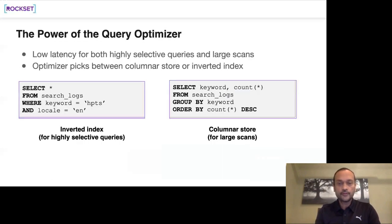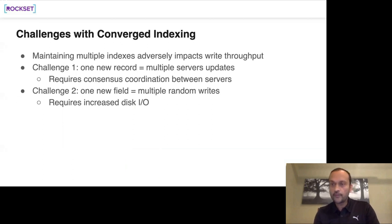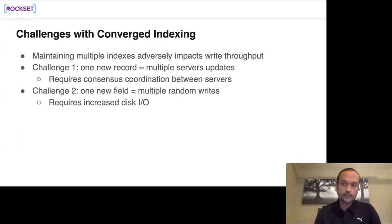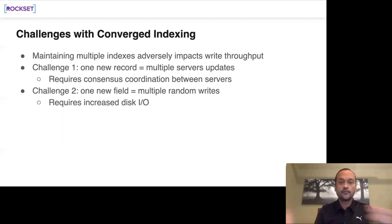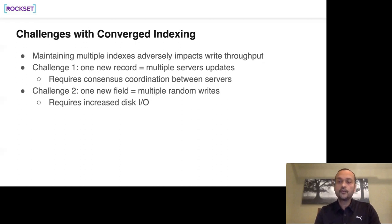The challenges with converged indexing: first is disk size. Second is consistency — we want atomic writes, meaning when we write one document, all indexes are updated atomically. In distributed systems, indexes might reside on different machines — updating a record on one machine while secondary indexes are on another requires a consensus protocol for atomic visibility. Also, if a record has 500 fields and you want to build 500 indexes, your write rate could be very high, requiring a system that can support that kind of indexing.